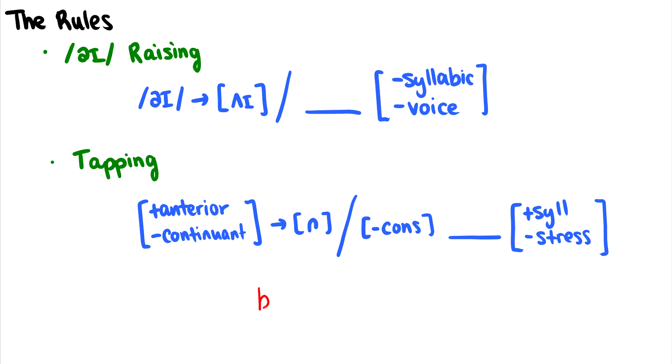If I have a word like butter, actually I should change this to butter. This t is a plus anterior minus continuant sound. This is going to become a flap because this a is not a consonant before it, and afterwards I have a vowel or syllabic sound and it's not stressed. So what I end up is with the word butter. You can kind of hear a difference there.